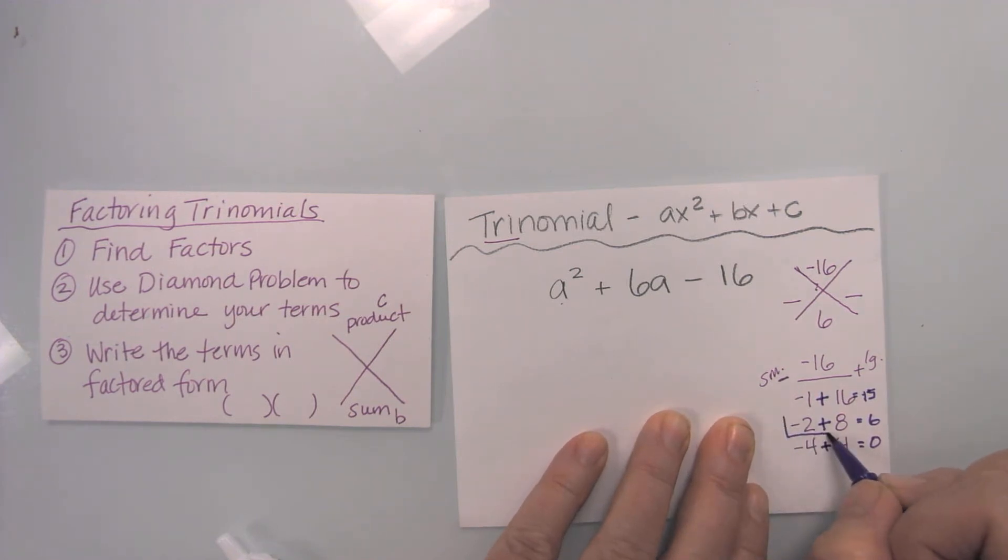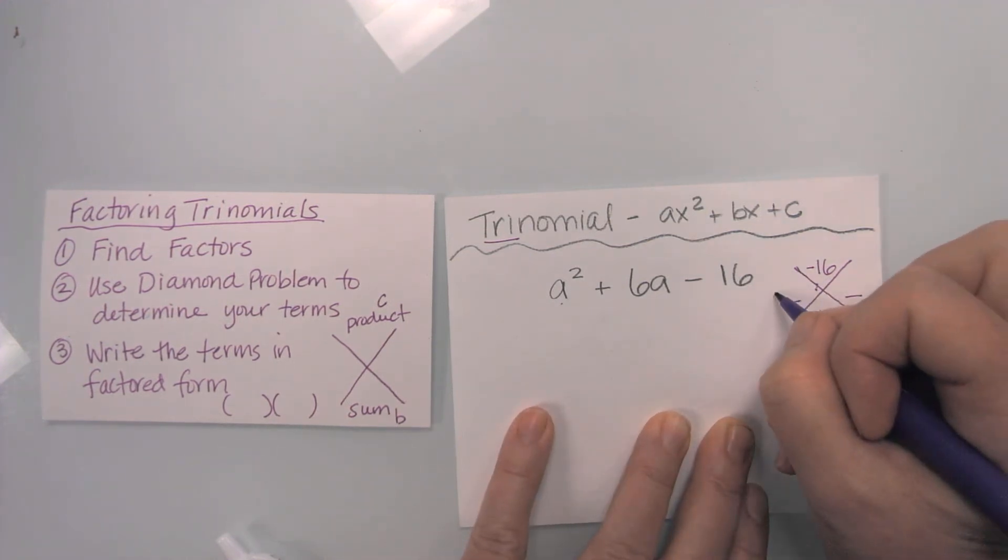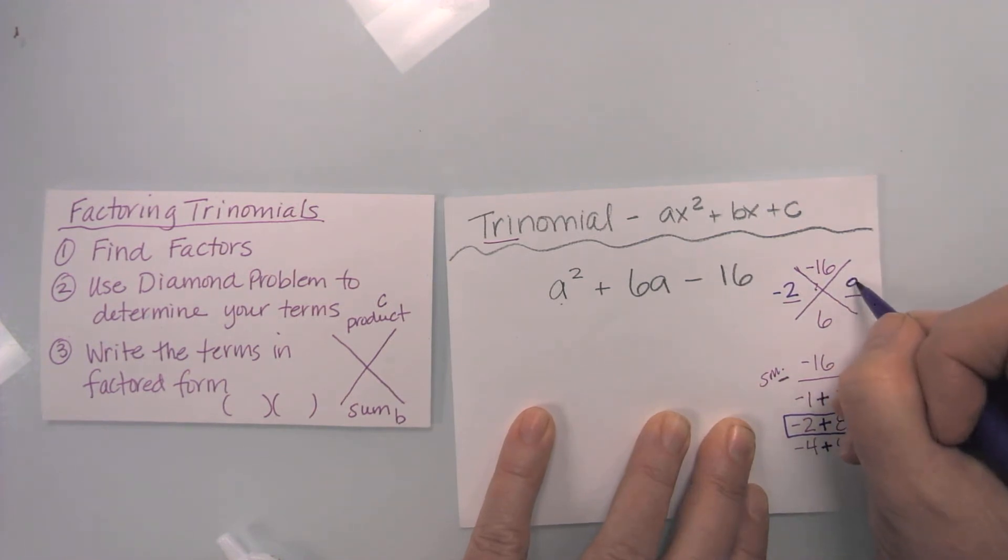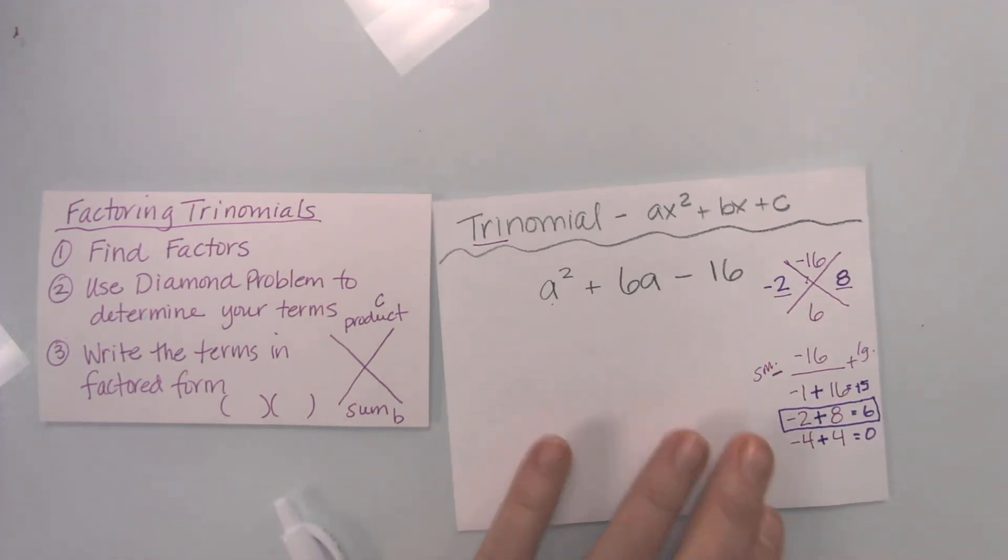I notice that this set of terms, my negative two and my positive eight equals six, which is what I'm looking for. So this is going to be negative two, and this is going to be eight. Those are my terms.